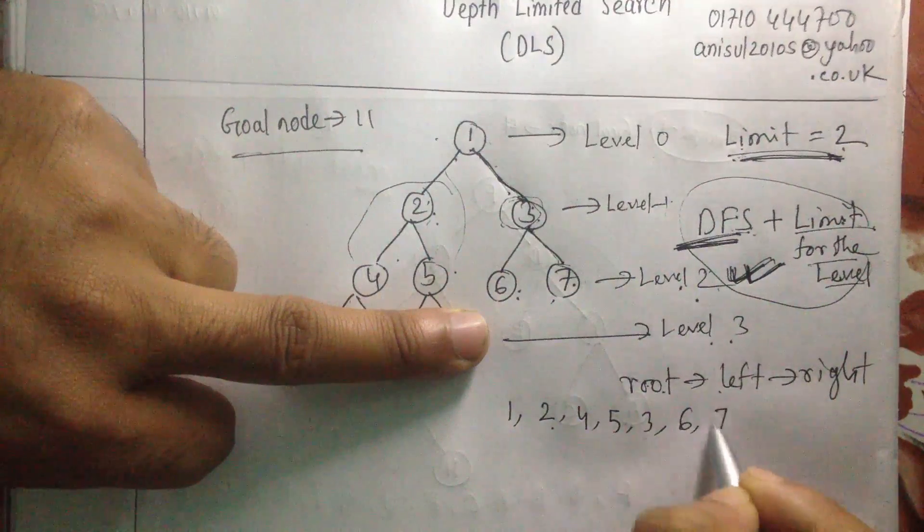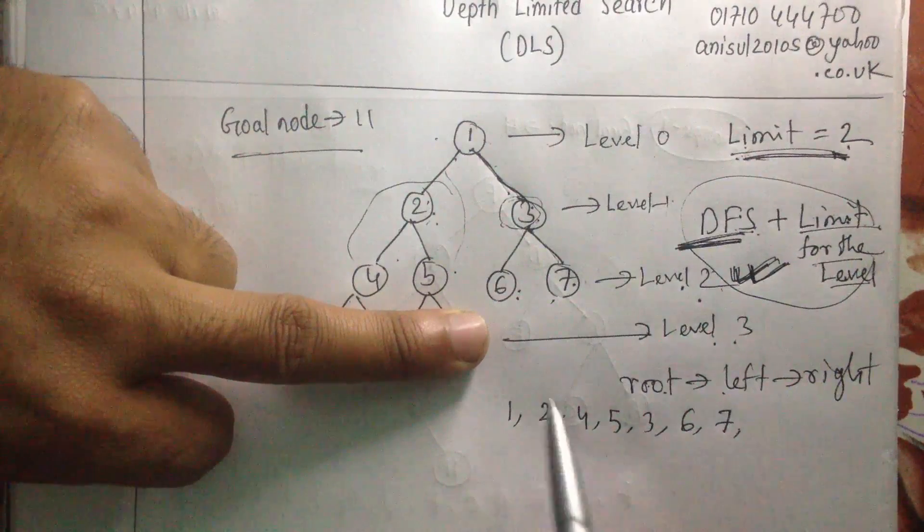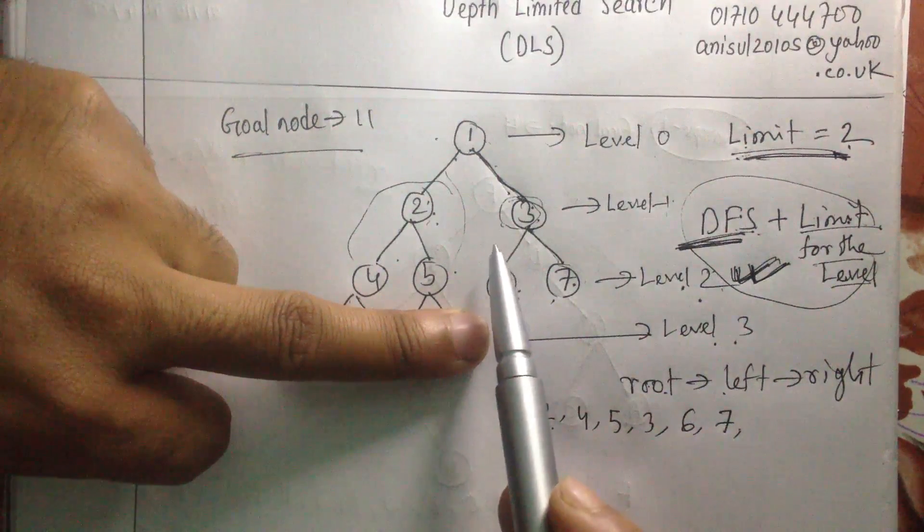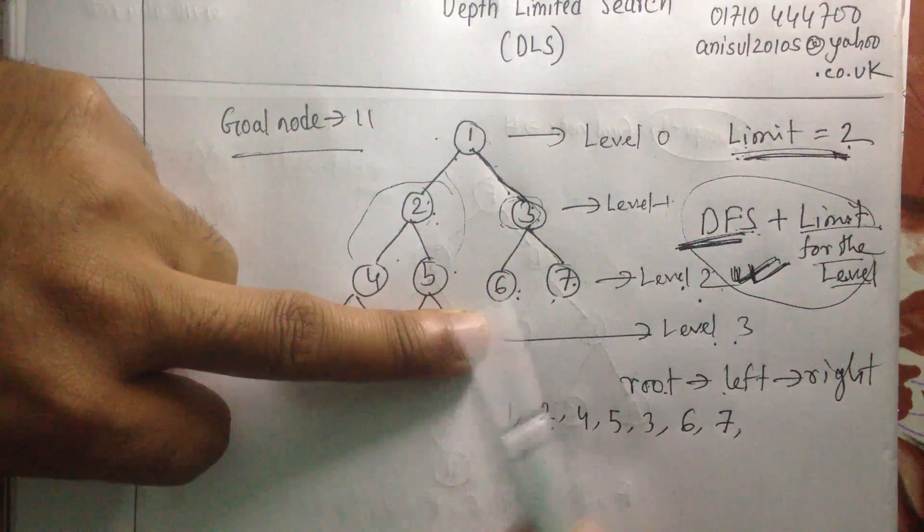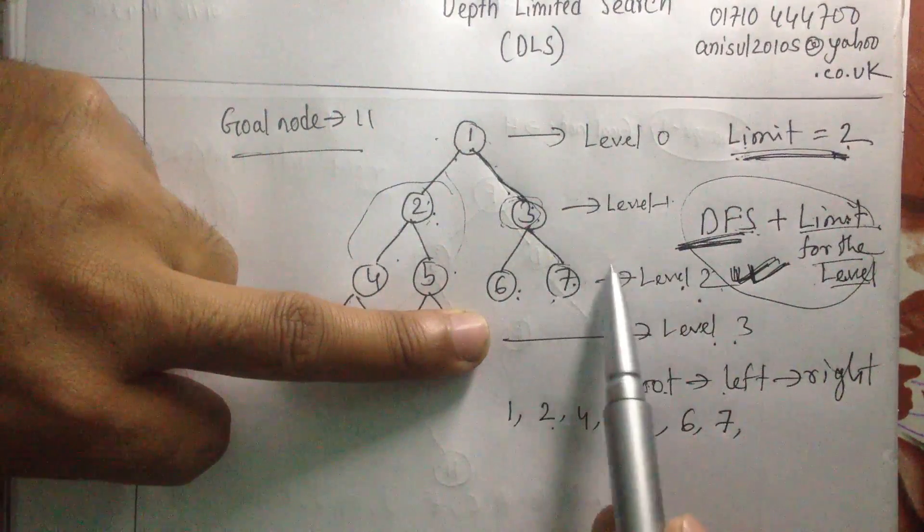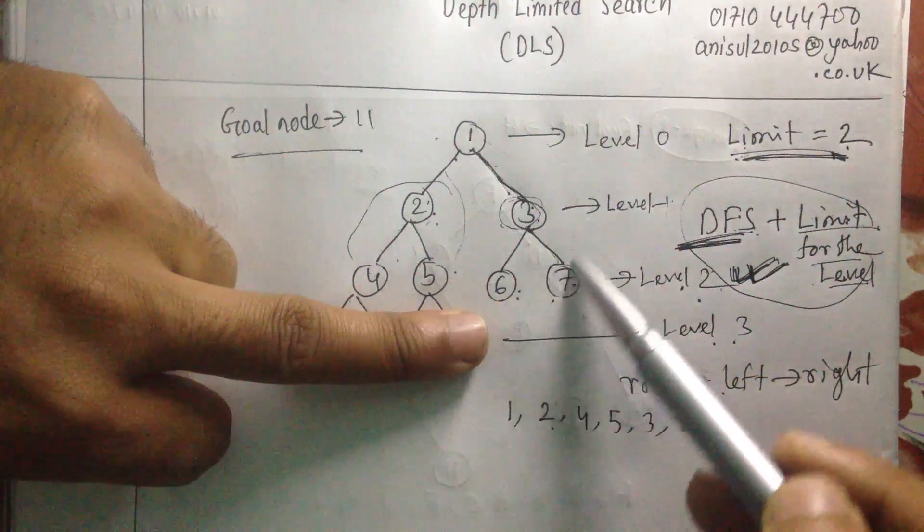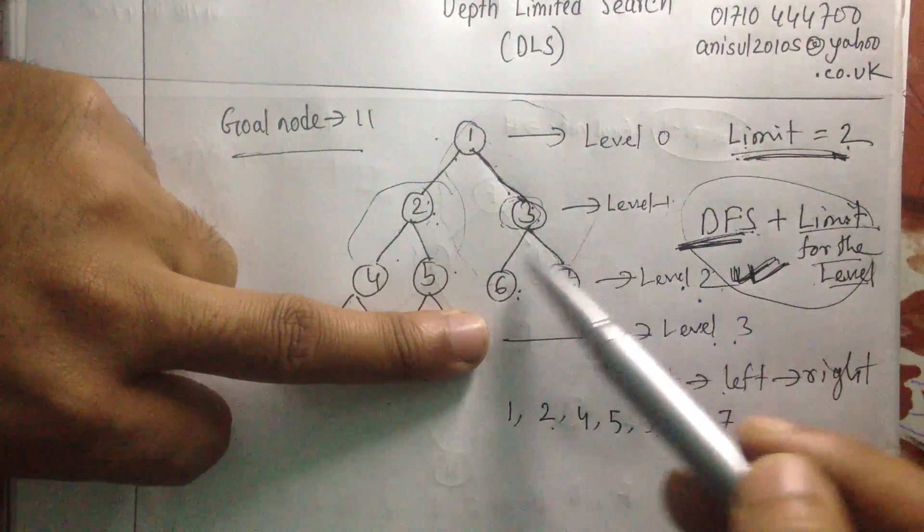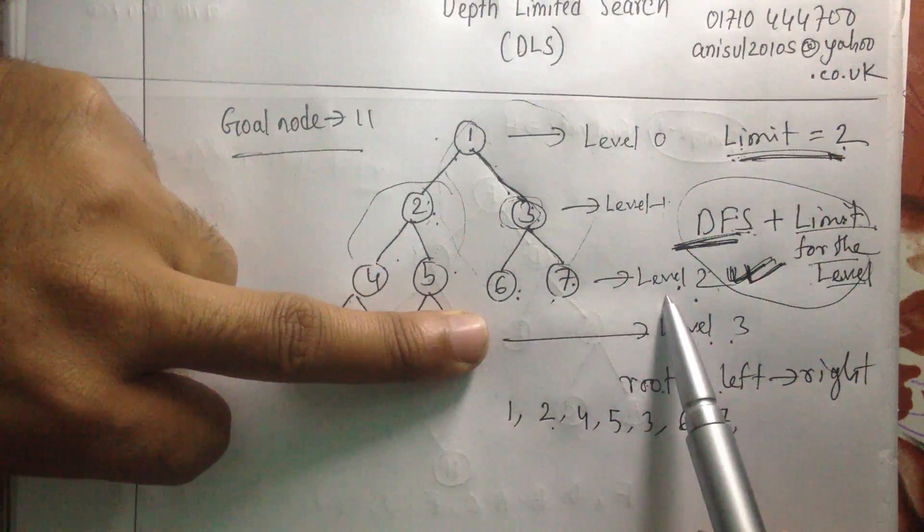And after finishing the left side, only after finishing the left side you can go to the right side. So this is end of our video tutorial. Our level limitation was 2, so I have only used my DFS till the level 2 from level 0 to level 2.